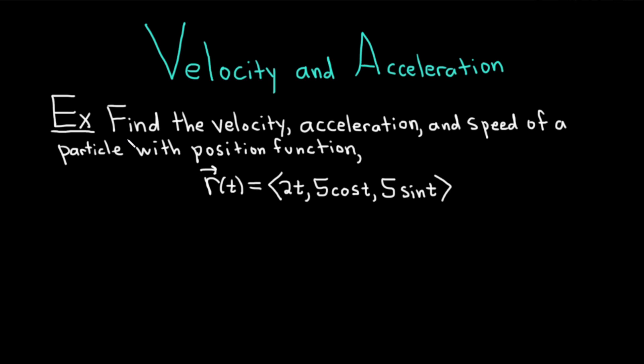The question is asking us to find the velocity, acceleration, and speed of a particle with position function given by the following vector-valued function. We have that r(t) is equal to ⟨2t, 5cos(t), 5sin(t)⟩. So let's work it out.